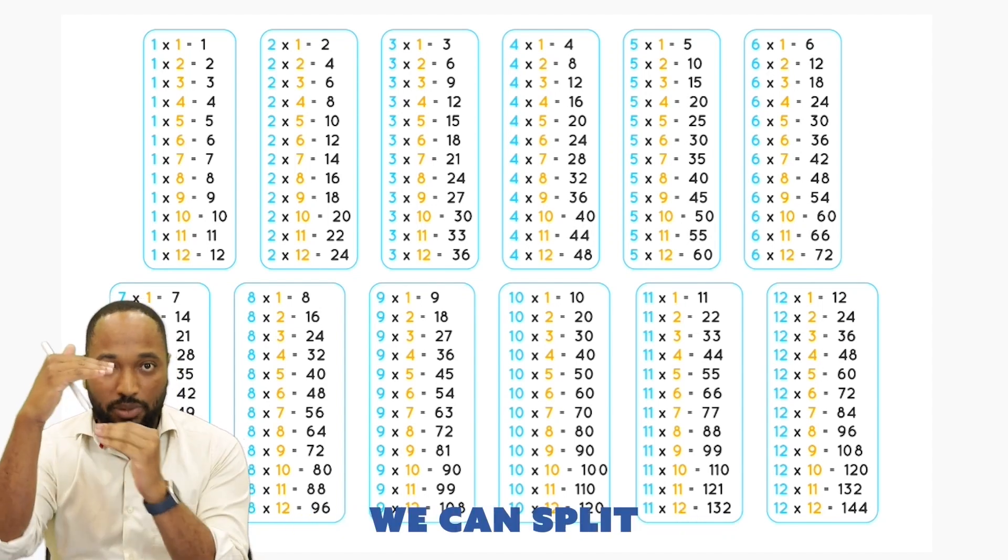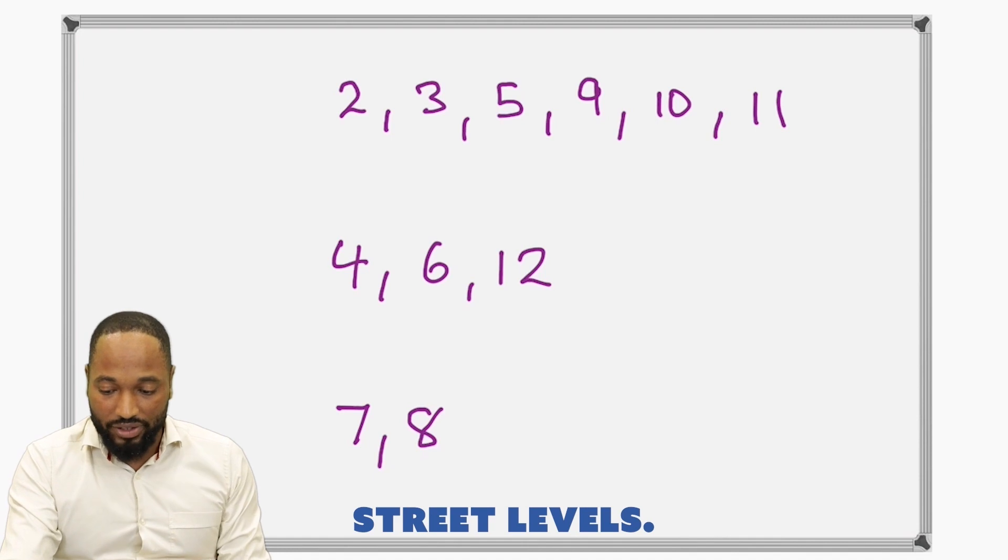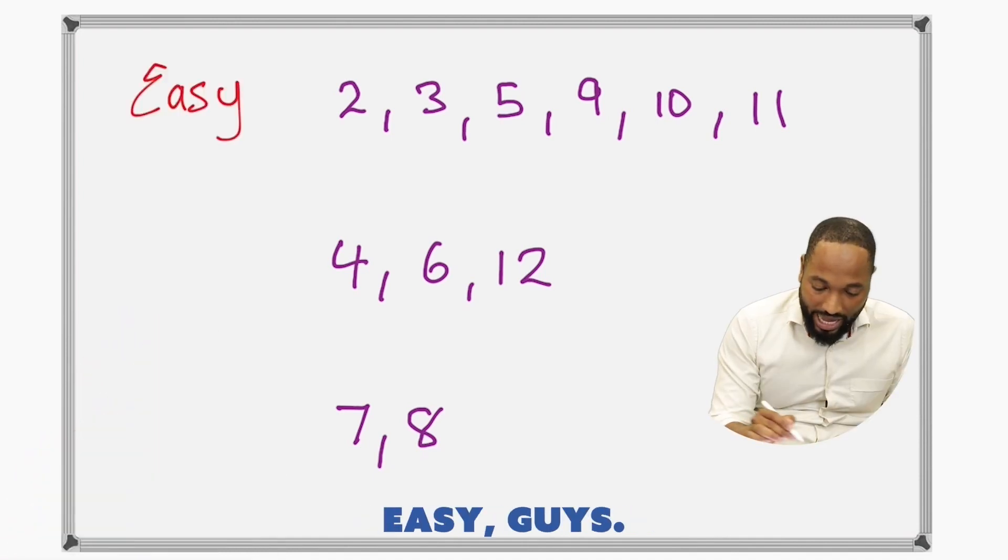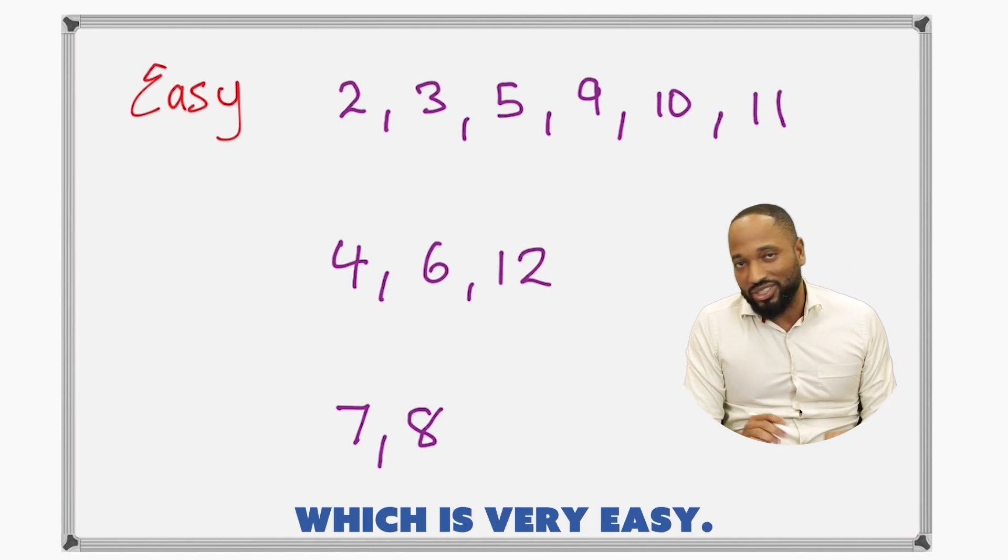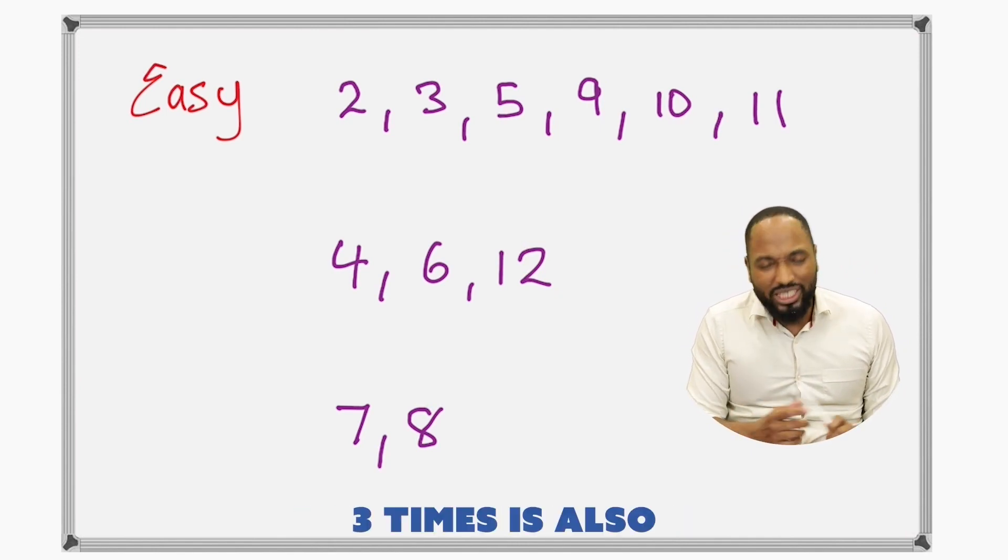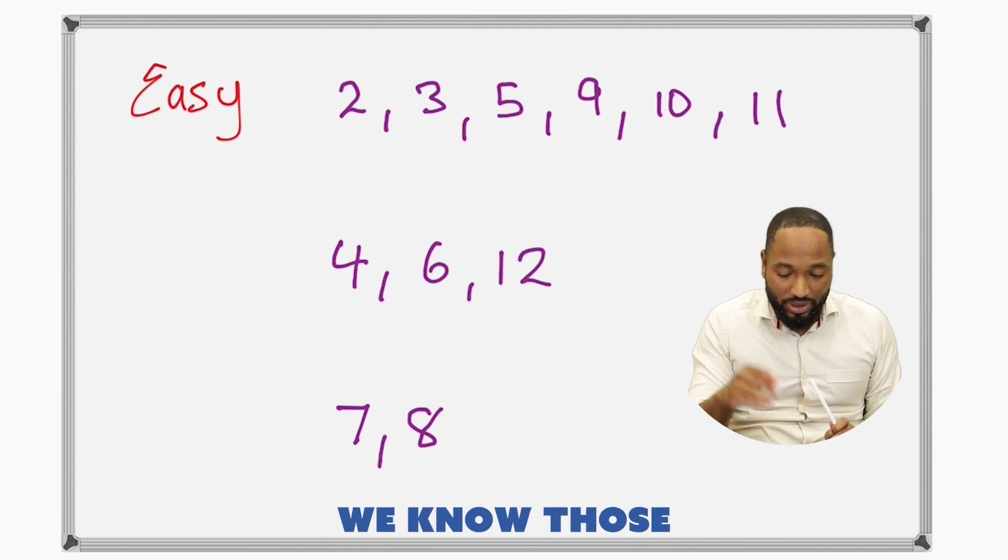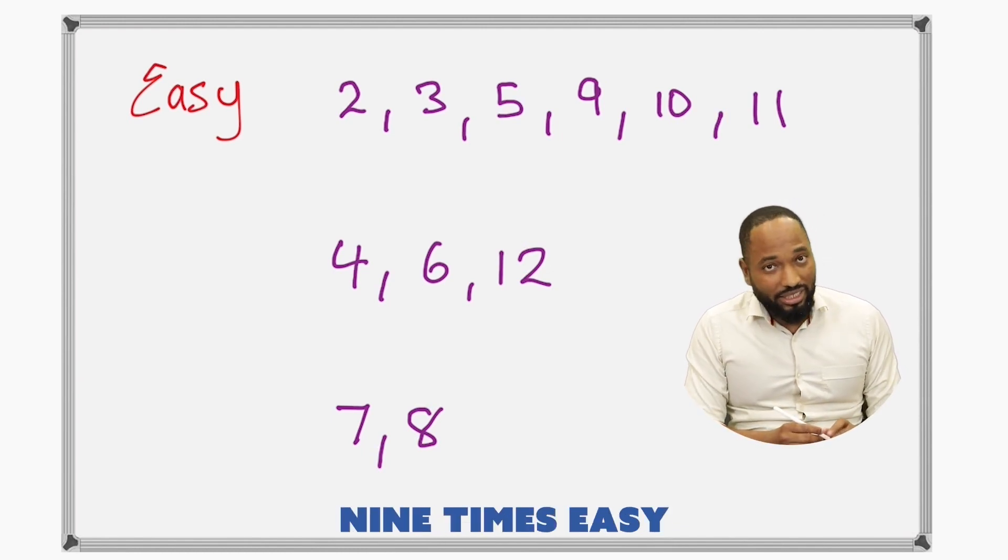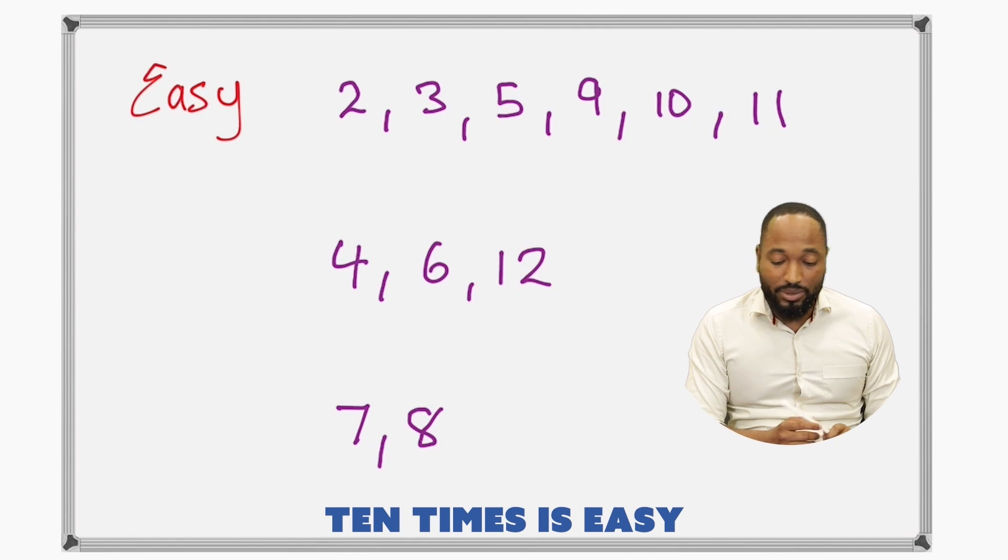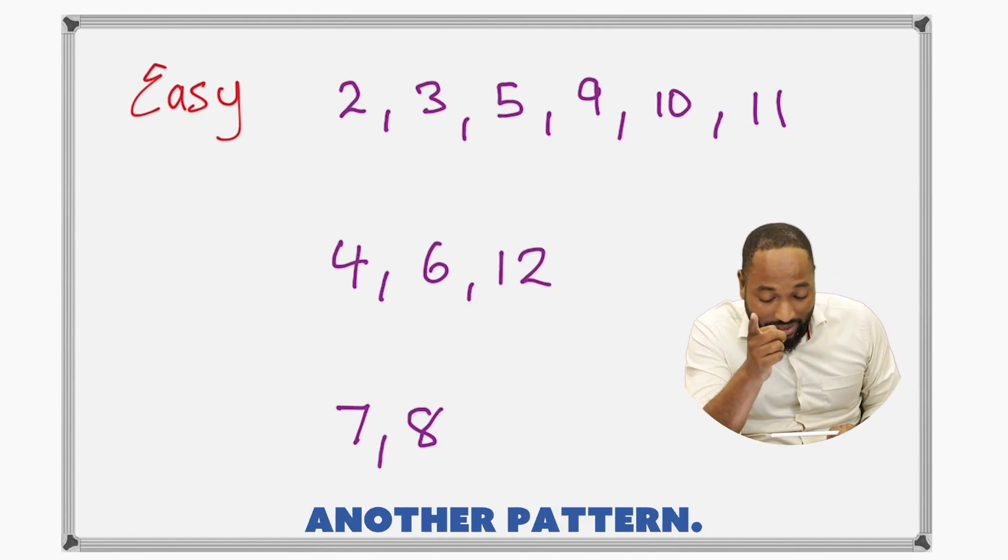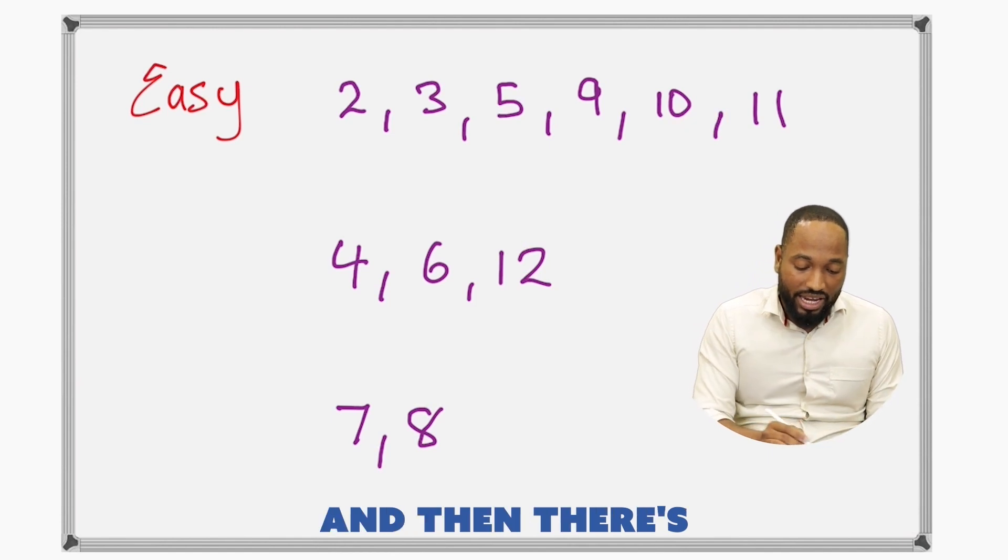Do you know that some of these tables have some patterns that make them really easy to learn? In fact, we can split the tables into three tier levels, three levels: easy, medium, and tough. Easy guys: I like the 2 times table, which is very easy. 3 times is also pretty easy. 5 times is super easy: 5, 10, 15, 20. We know those. 9 times, easy because there's a pattern. 10 times is easy because 10, 20, 30, and 11 times table because there's another pattern.